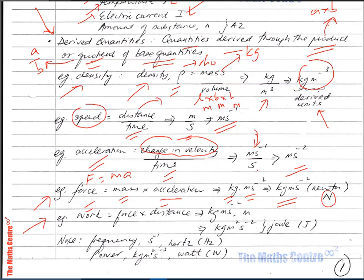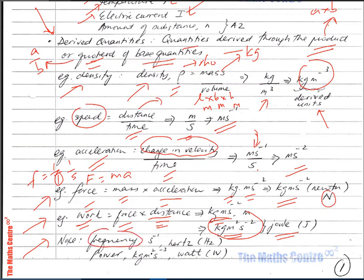Work is equal to force times distance. The base units for force are kilogram meter per second squared, and for distance, meter. So the base units for work are kilogram meter squared per second squared — one kilogram meter squared per second squared is one joule. Frequency is defined as f = 1/T (one over the period). The period is in seconds, so frequency has base units of per second, and one per second is one hertz.